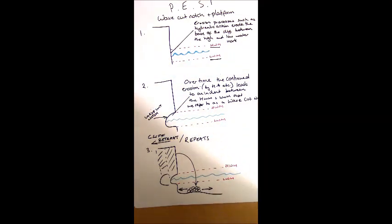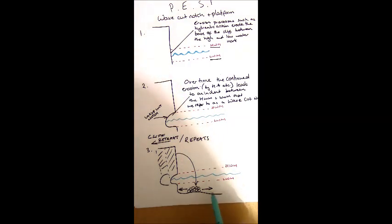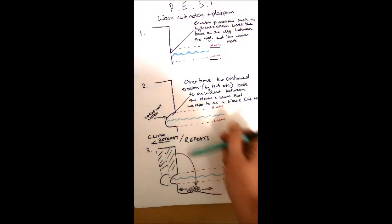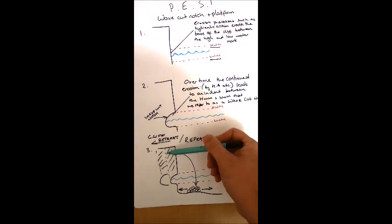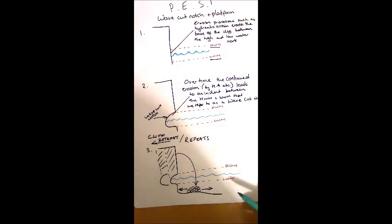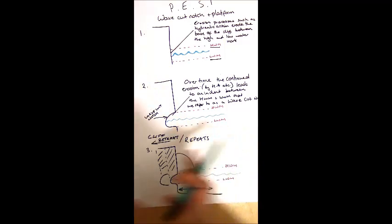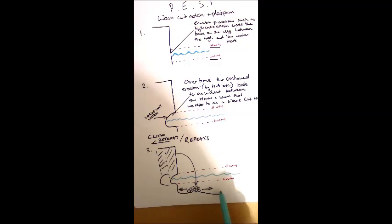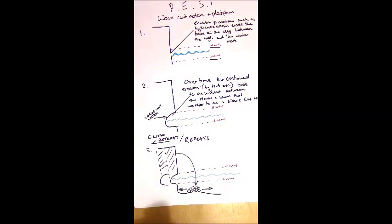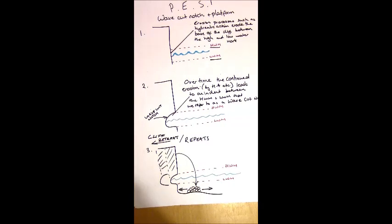We still haven't explained how a wave cut platform is created. The wave cut platform is a smooth, flat area of seabed directly in front of the cliff, often exposed at low tide. It's created from the collapsed cliff material. When that material falls onto the seabed, it's in the zone of breaking waves, and the backwards and forwards motion of the waves causes high rates of abrasion — a sandpapering effect — creating the smooth, flat wave cut platform.